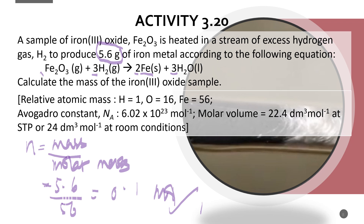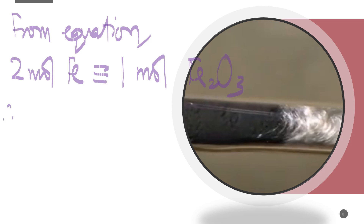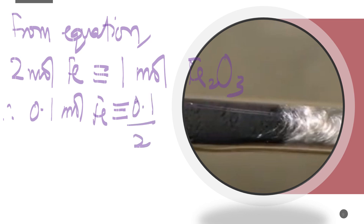From the equation, two moles of iron is produced by one mole of iron trioxide. Therefore, if we have 0.1 moles of iron: moles of Fe2O3 = 0.1 ÷ 2 × 1 = 0.05 moles of iron trioxide.